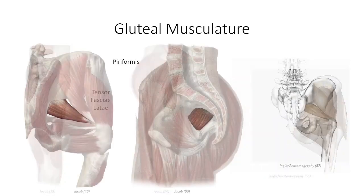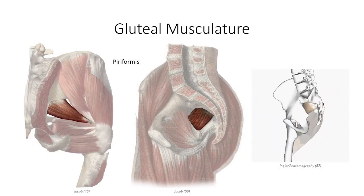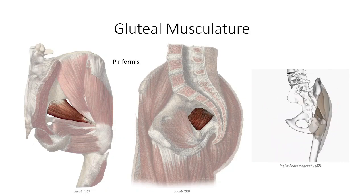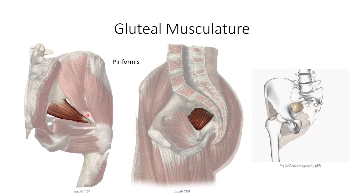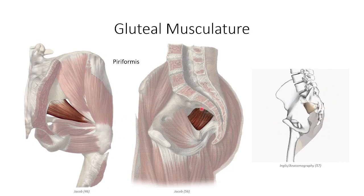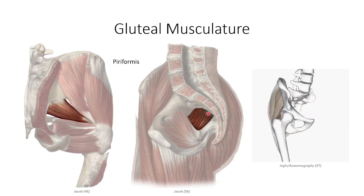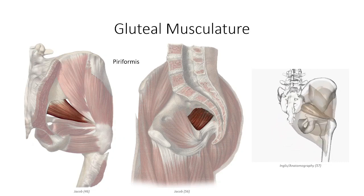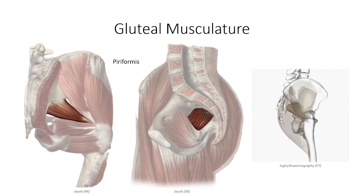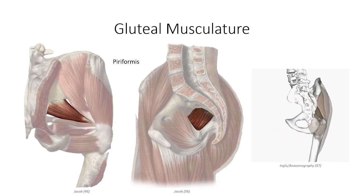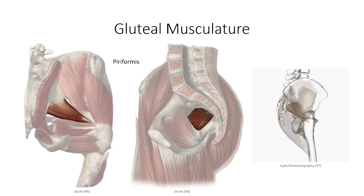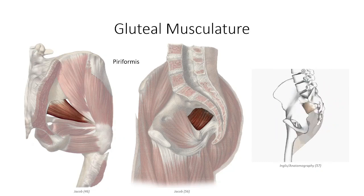The next muscle is the piriformis. Piriformis is a Latin term describing the shape of a pear — while we only see the narrow insertion of the piriformis initially, it broadens like a pear as it projects through the greater sciatic foramen and approaches its origin off the internal surface of the sacrum. The muscle inserts on the greater trochanter, medial to the insertion of gluteus medius and minimus, and serves as a lateral rotator of the hip. As we will later discuss, piriformis is an important landmark for several neurovascular structures.